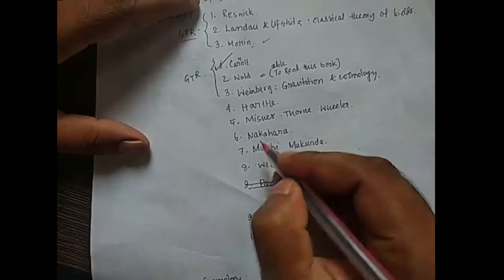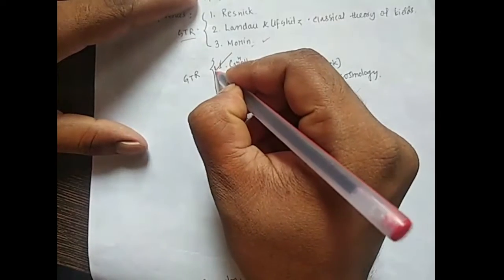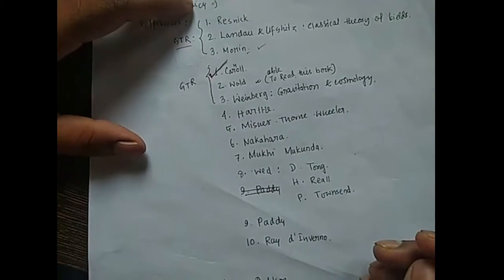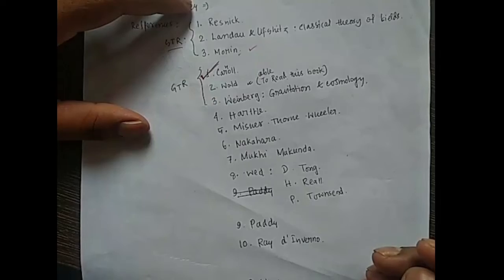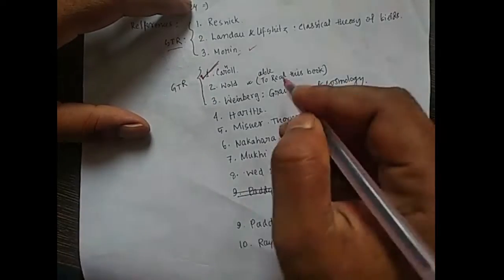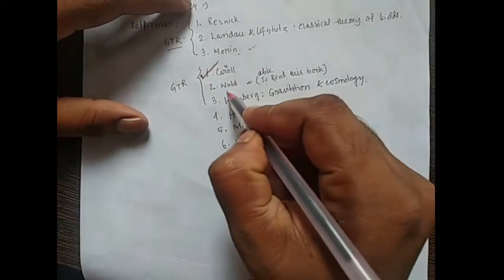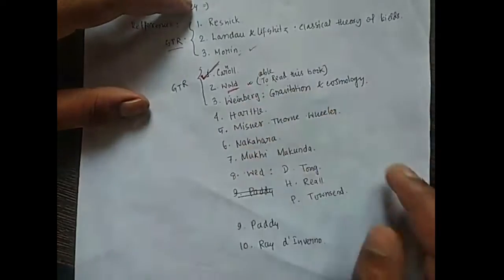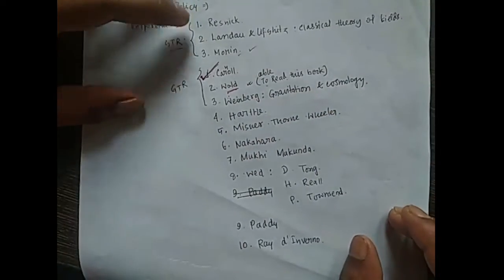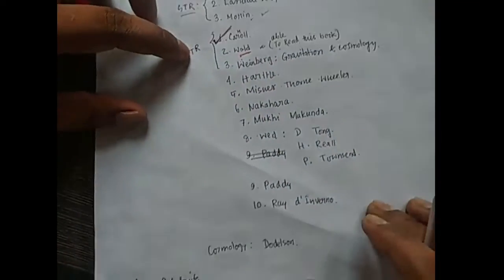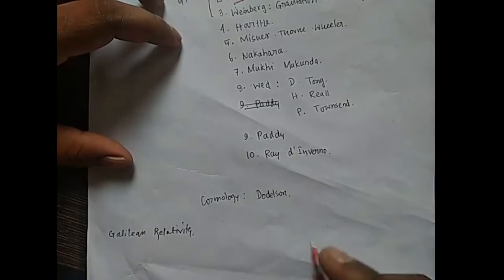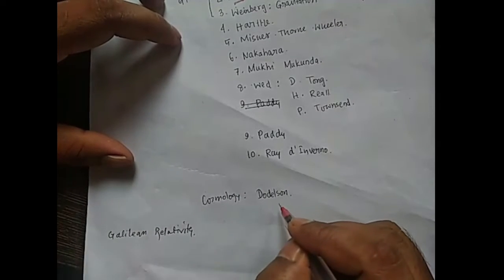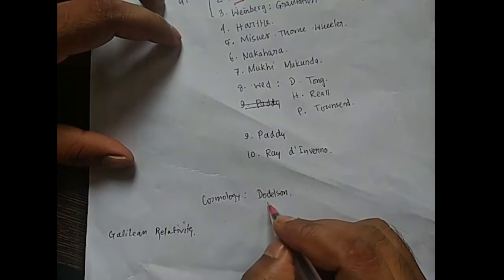Our main goal is to understand and to be able to read Carroll by the end of the course. Carroll is a good reference for our study. At the last part of the course, we will use Cosmology by Dodelson.